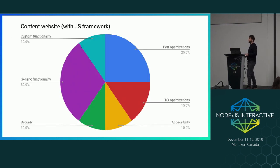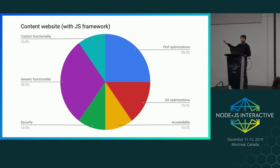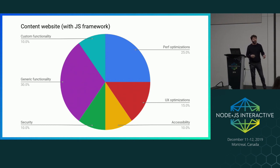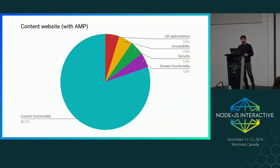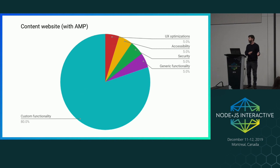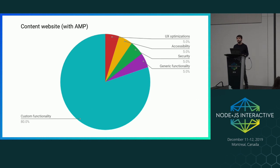If you're building content-focused websites using a JavaScript framework, a lot of time gets spent on performance optimization, build tools, Babel configuration, and Webpack. That's a lot of expensive time you could be using to focus on your content instead. With AMP, our partners have seen a shift in how they work — they spend far more of their time on things that are custom and unique to their domains.